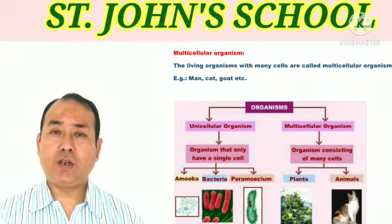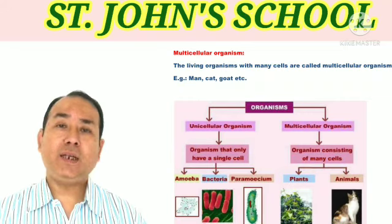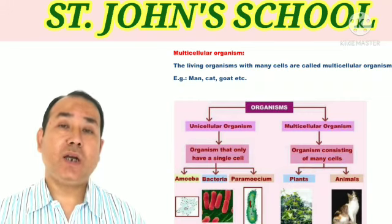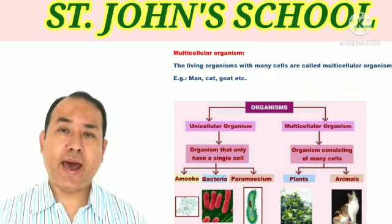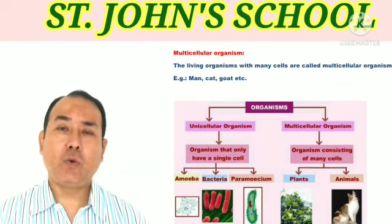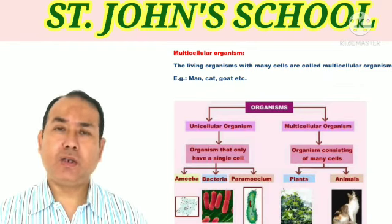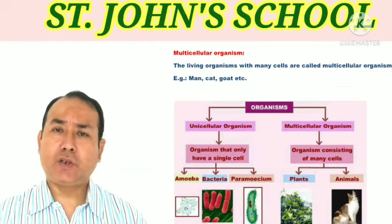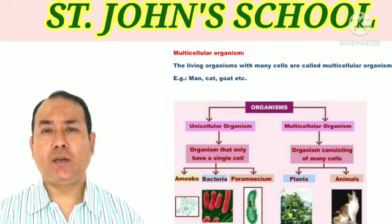So, organisms with many cells are called multicellular organisms. Examples include man, goat, cat, dog, and so on. Plants and trees particularly are also multicellular organisms.